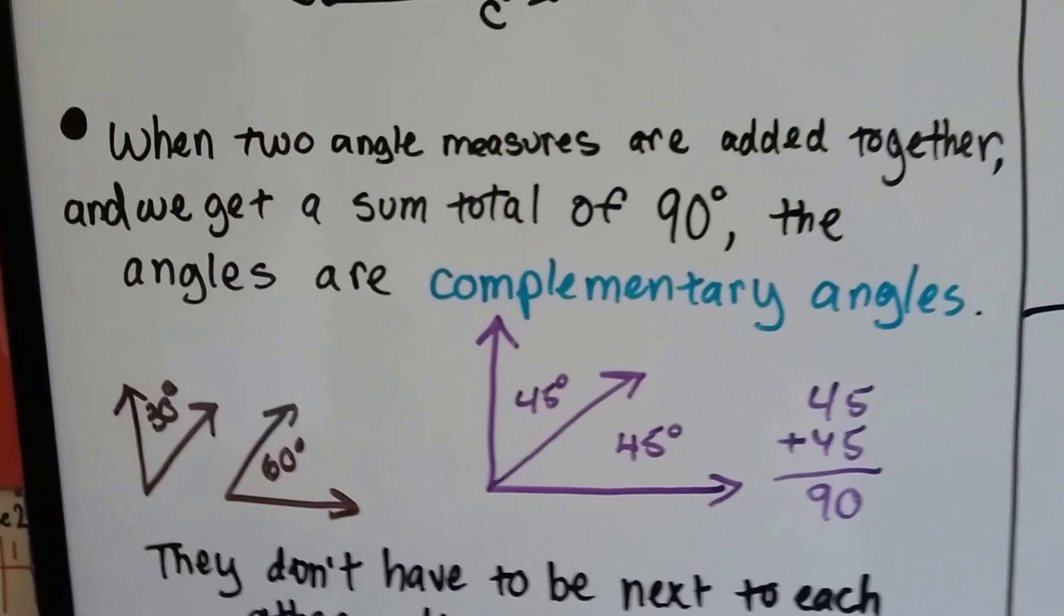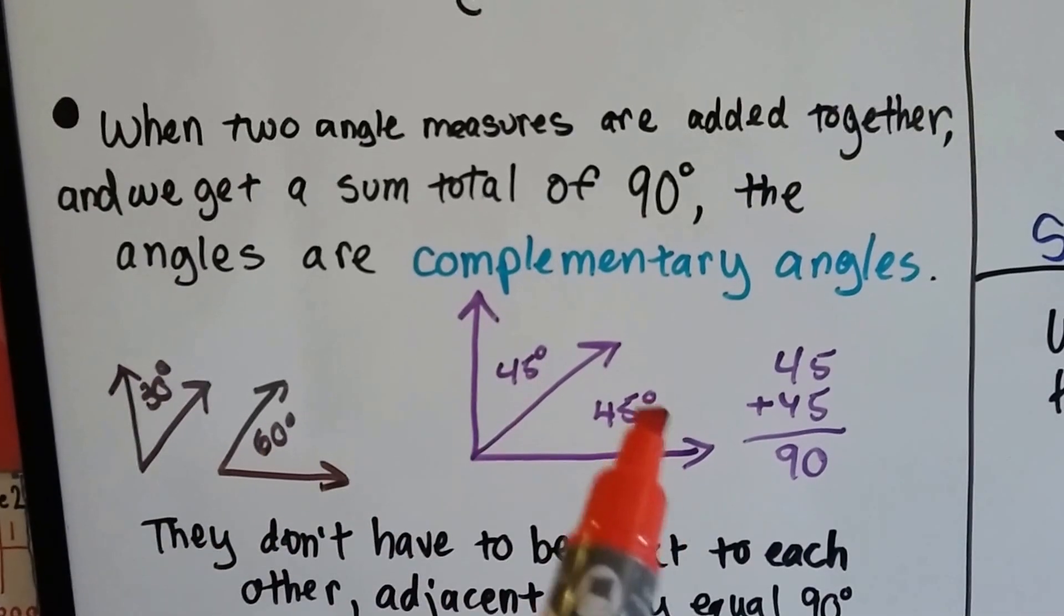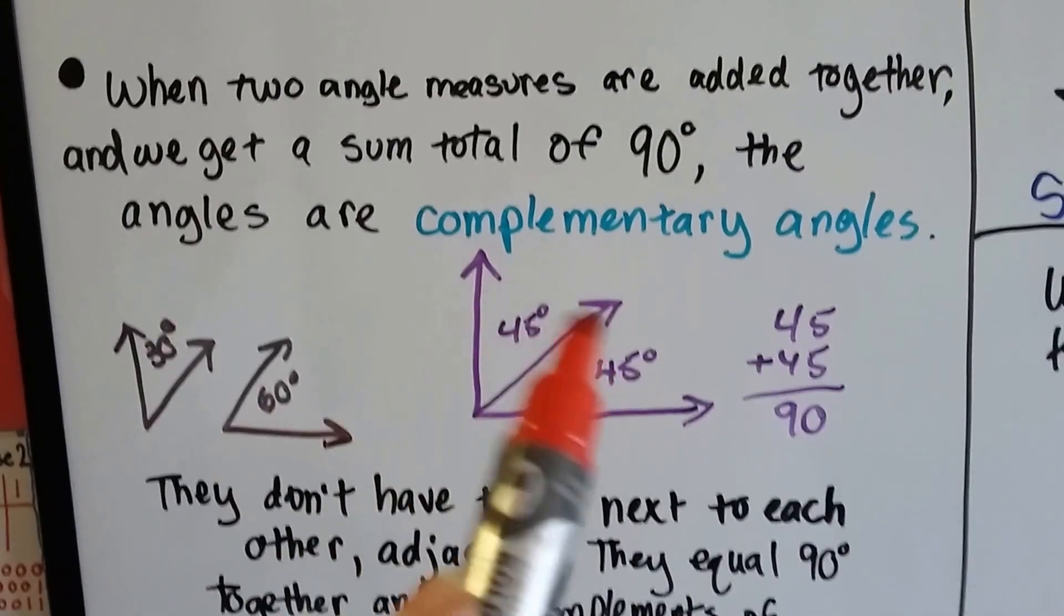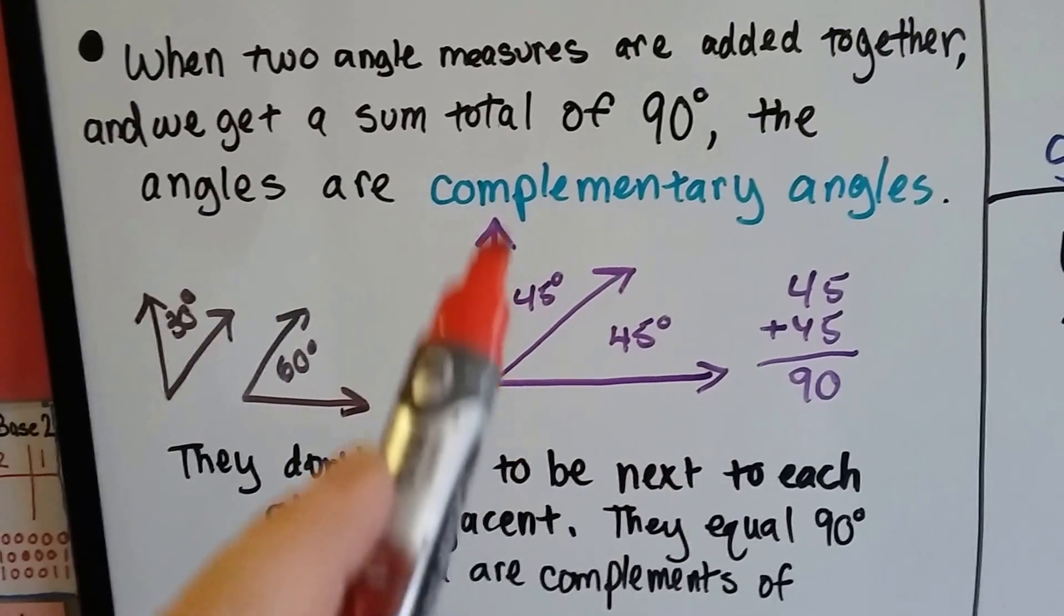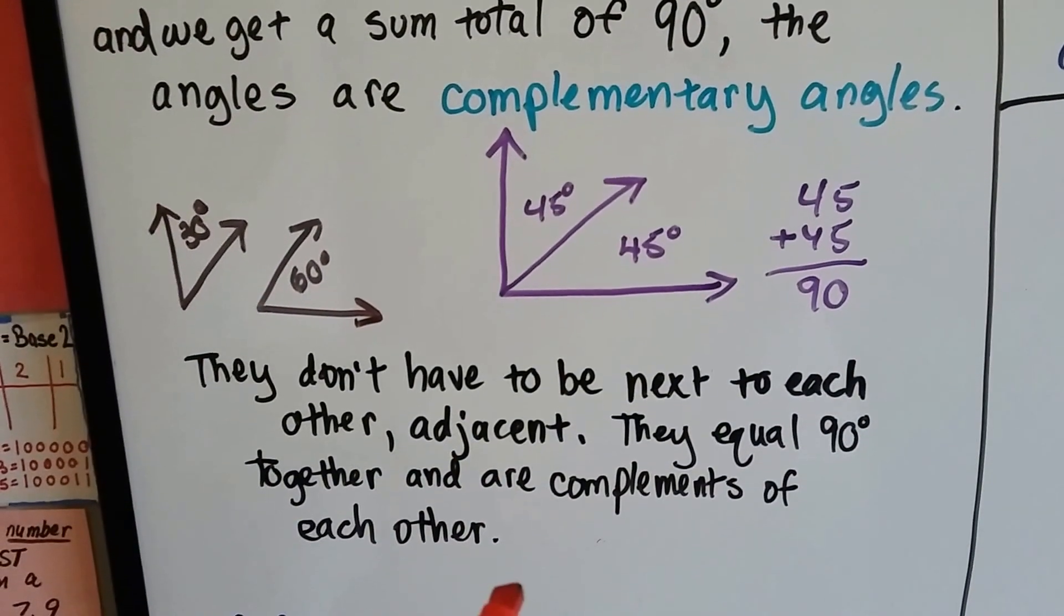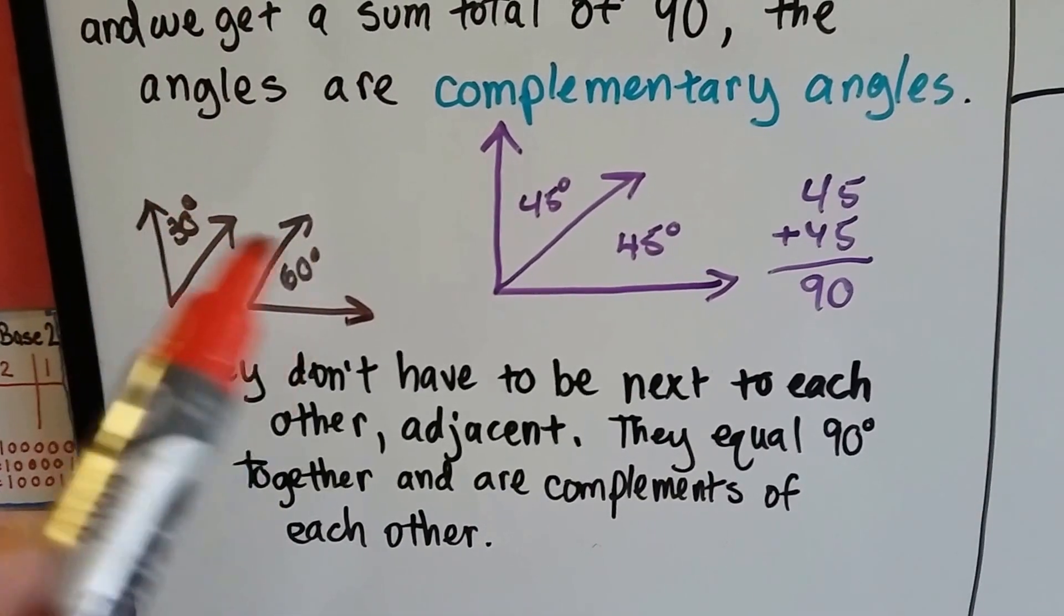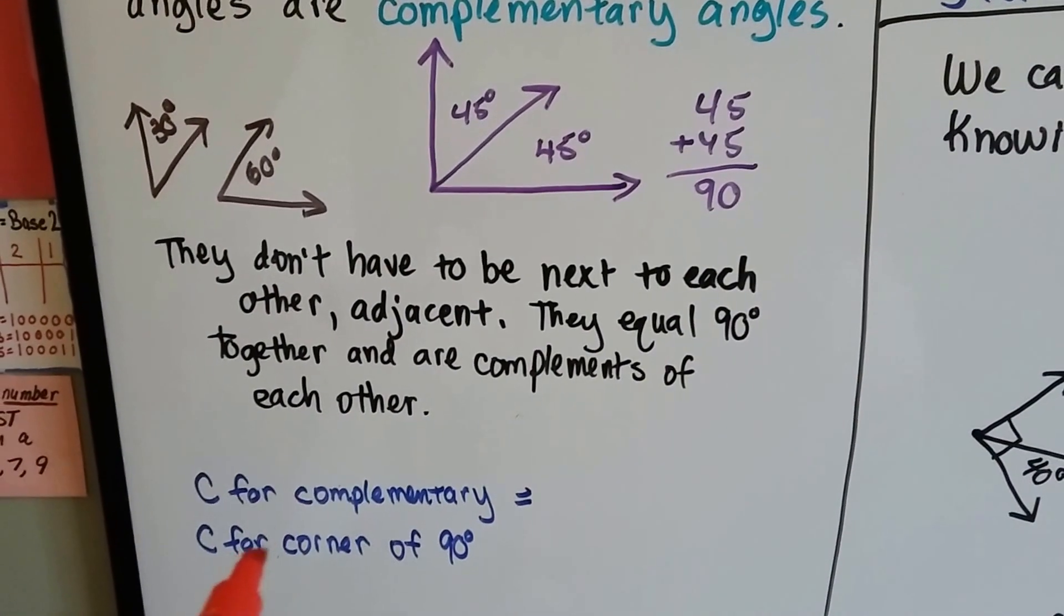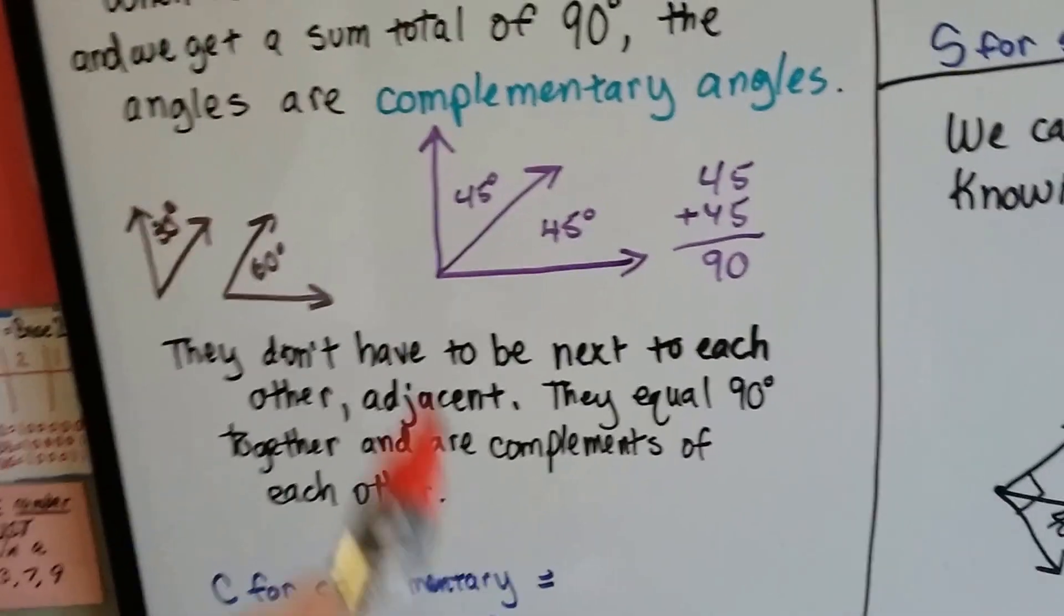When two angle measures are added together and we get a sum total of 90 degrees, here's 30 and 60, or 45 and 45, the angles are complementary angles. These two 45 degree angles make one right angle. And this 30 degree and this 60 degree are complementary. And they don't have to be next to each other. They don't have to be adjacent. They equal 90 degrees together, and they are complements of each other. You can remember the C in complement is like C for corner. That makes 90 degrees for a 90 degree angle.